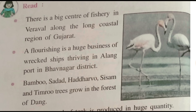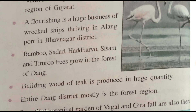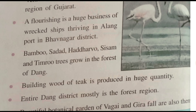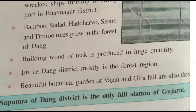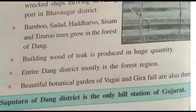There are big centres of fishery in Veraval, as Gujarat has a long coastal region. A flourishing business of wrecking ships is found at Alang port in the Bhavnagar district. Trees like Bamboo, Satin, Hadro, Shisham, and Teak are grown here and wood from these trees is used for building in large quantities.